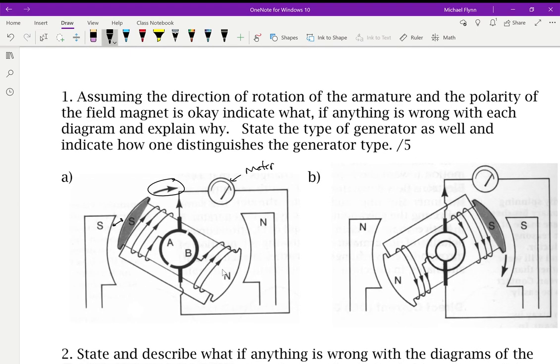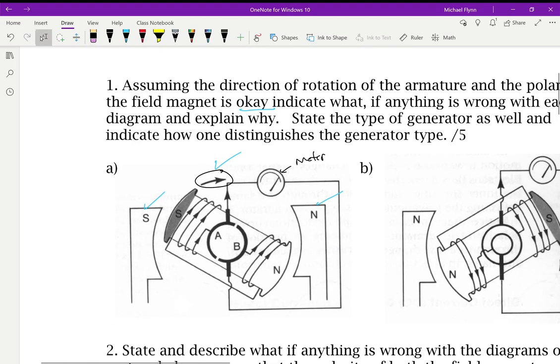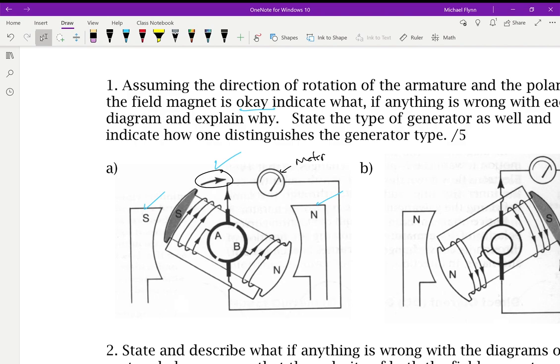It says, assuming the direction of rotation is correct, so that one is correct. And the field magnet, polarity of the field magnet, so this is correct, and that is correct. It says, state, what, if anything, is wrong with each diagram. I'm going to take my right hand, and if the current is labeled correctly, then I'm going to wrap my fingers around that coil in the direction of the current. My thumb points to where the south is, but that's what the problem is. This is supposed to be a north.